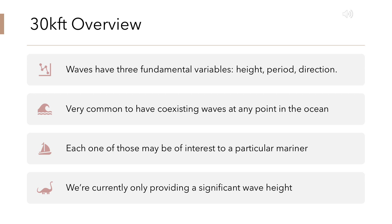Wave height and period are pretty basic. Wave height is basically how tall the wave is from trough to crest. Wave direction refers to what direction the waves are coming from. Wave period at a high level is how long it takes for successive waves to pass a fixed point such as a buoy.